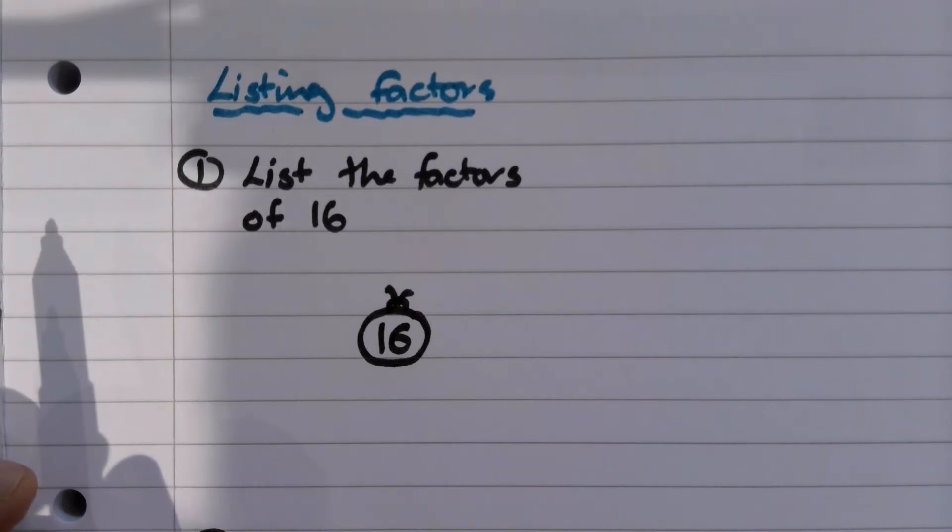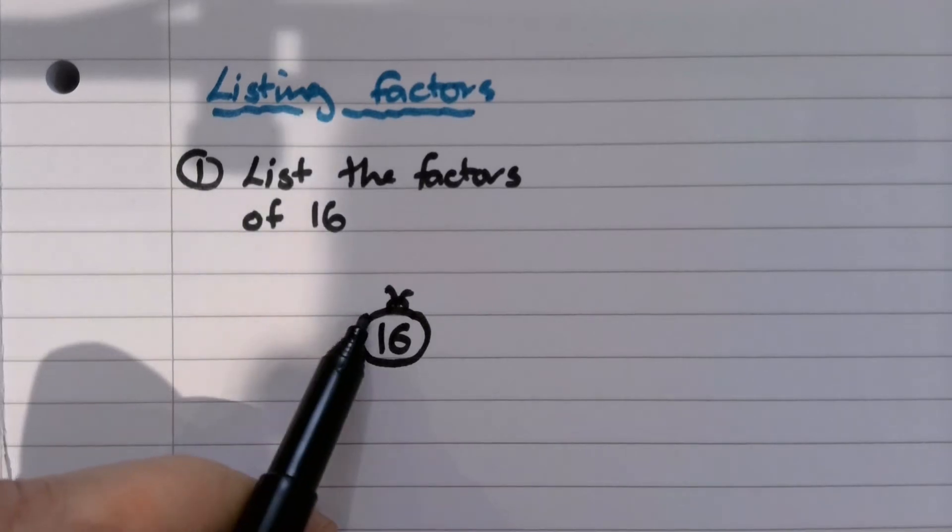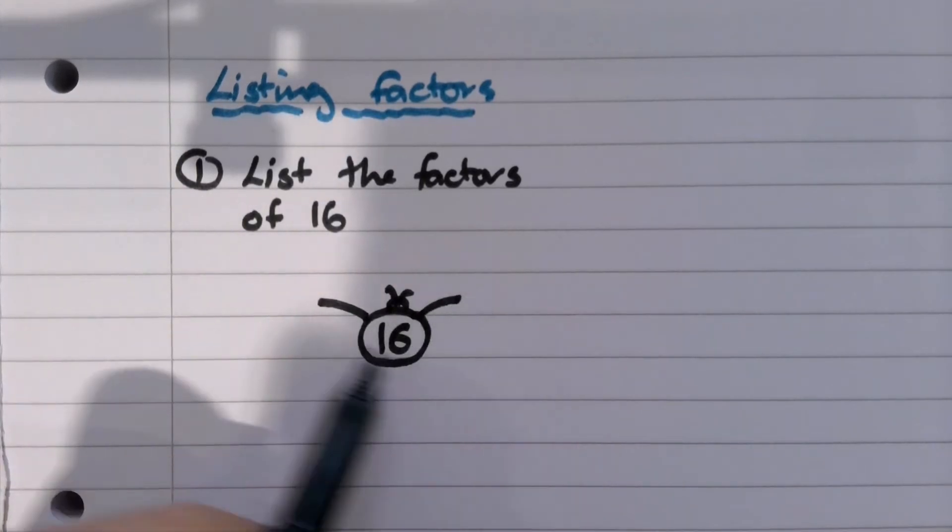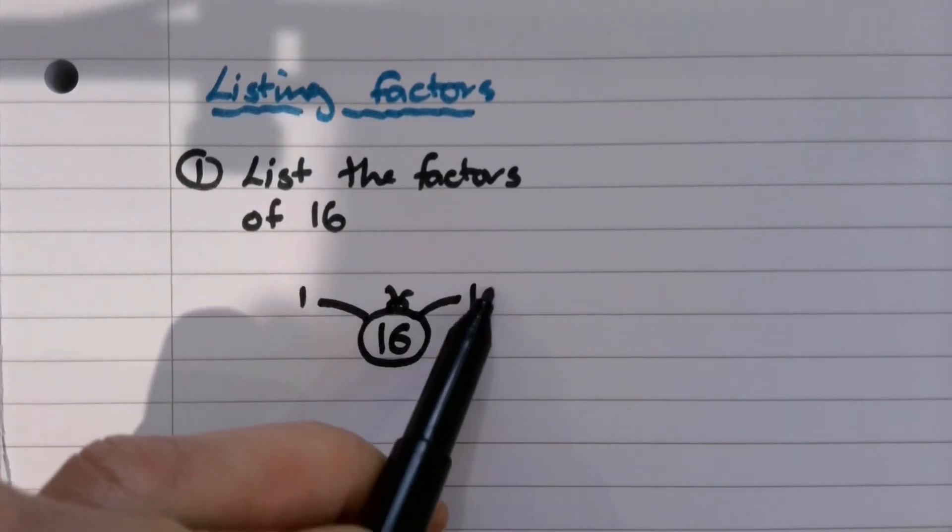And we like to think of them in factor pairs so that we can think of it as like a times table type problem. So the first pair of numbers we're going to think about is one times 16 is 16. That's good.